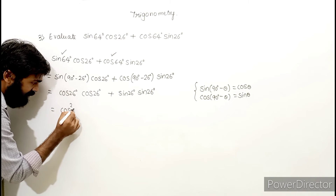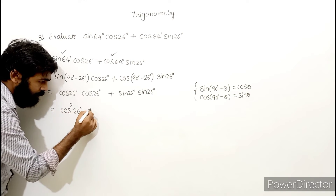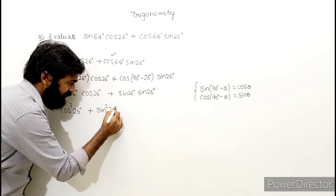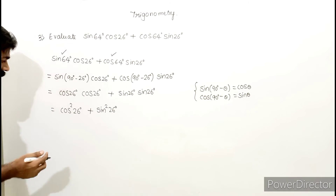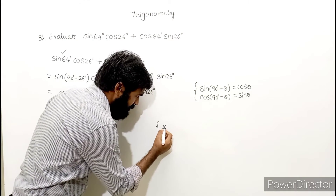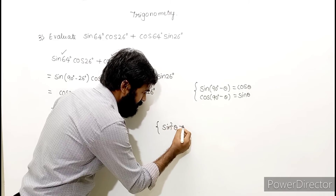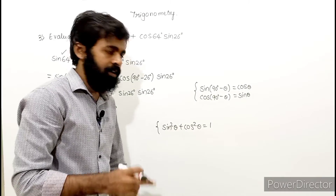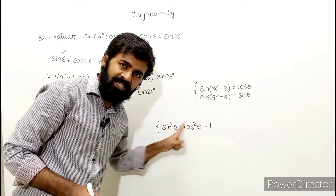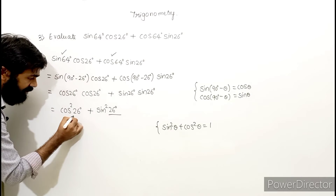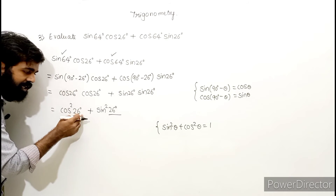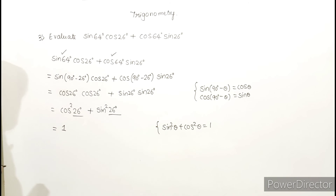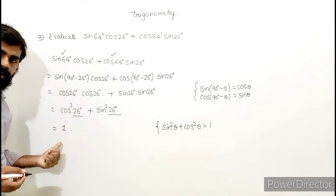This gives us cos² 26 degrees plus sin² 26 degrees. Using the identity sin² θ plus cos² θ equals 1, and since both angles are 26 degrees, the expression equals 1. So sin 64° cos 26° plus cos 64° sin 26° equals 1.